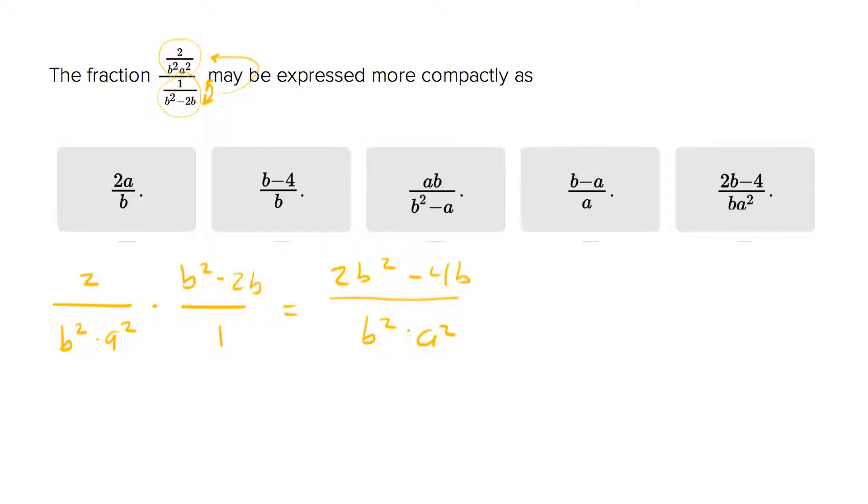We're going to need to do some creative simplification here because I don't see that among the answer choices. But you'll notice there seems to be an extra b floating around, so if we carve a b out of every term, what you end up with is 2b minus 4 over ba squared, which is your answer.